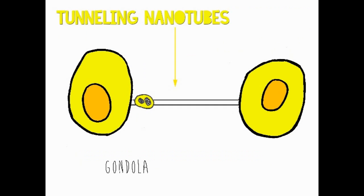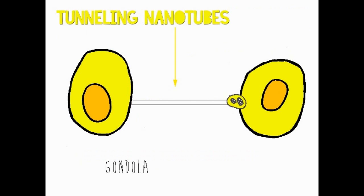Gondolas, as shown, are suspected to be organelles or other large cytosolic molecules being transferred.